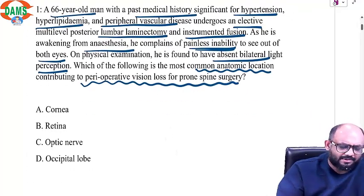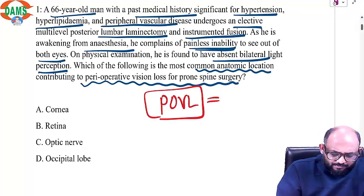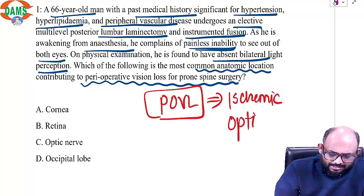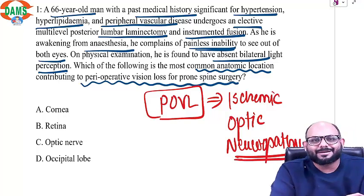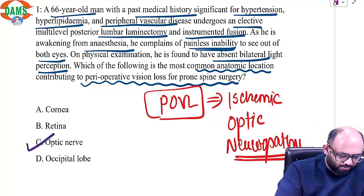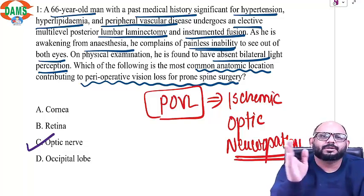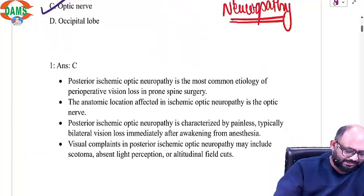This is a complication we have already discussed called POVL. We know the most common cause of POVL is ischemic optic neuropathy. That happens because you put the patient in prone position for a long time, which causes a critical decrease in blood supply to the optic nerve — that is why it is called ischemic optic neuropathy, or ION. So the correct answer is the optic nerve.